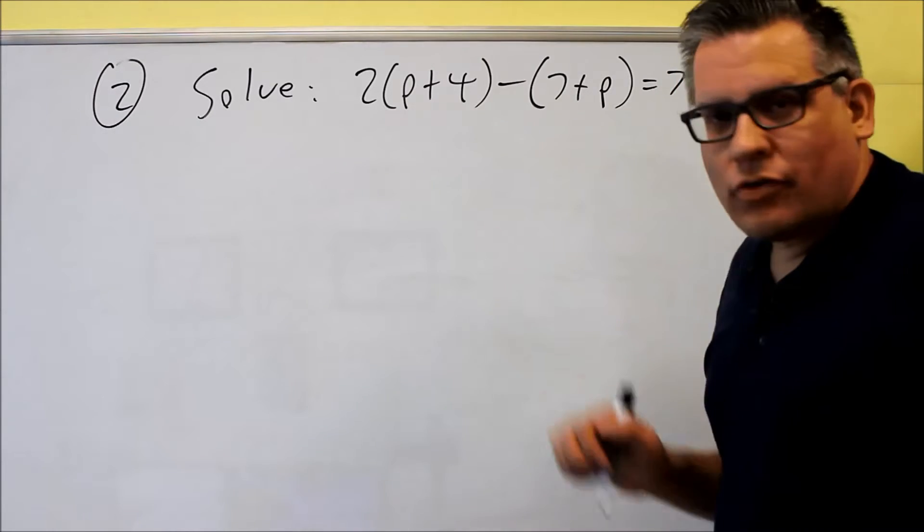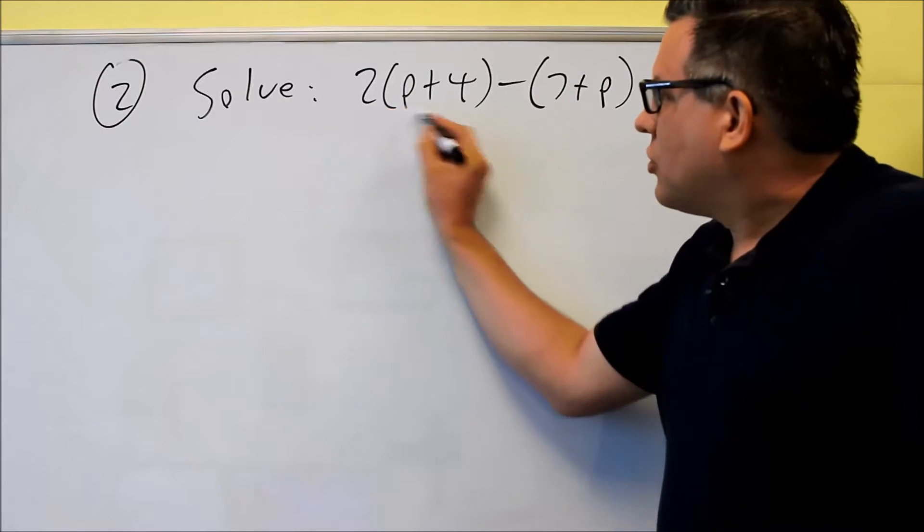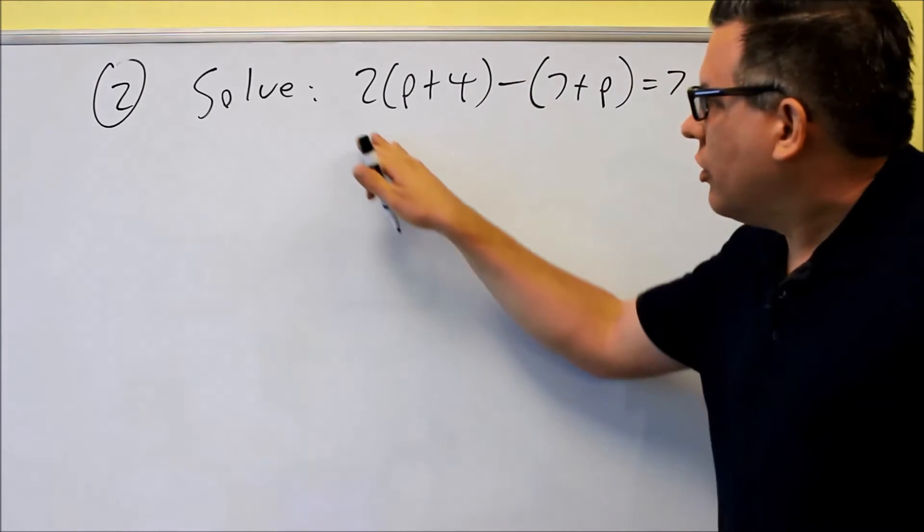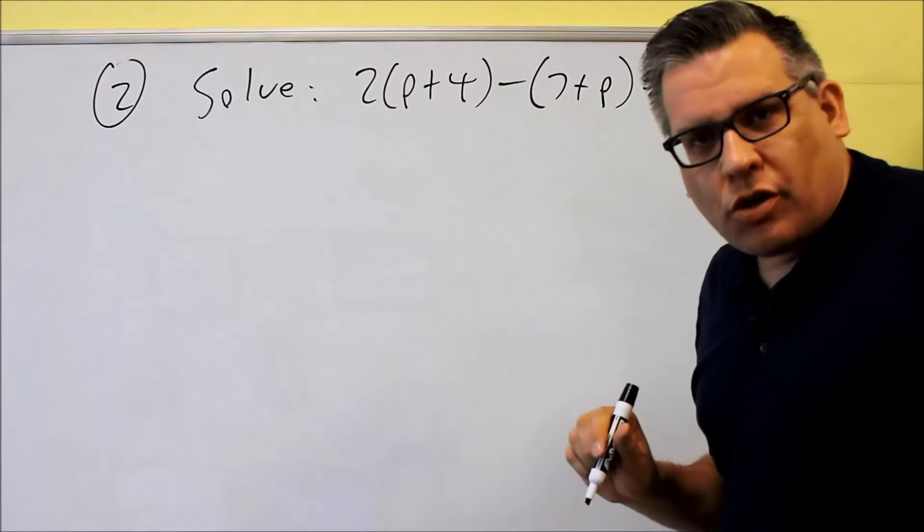Okay, number two, another one we have to solve. Now for these kind of problems, if you've got any kind of parentheses with some number on the outside, what you want to do is multiply through and clear that out.